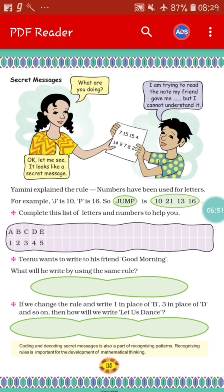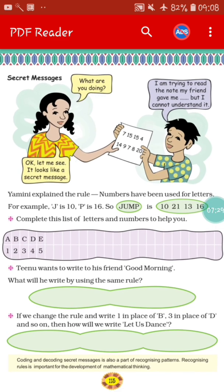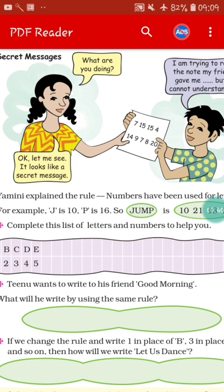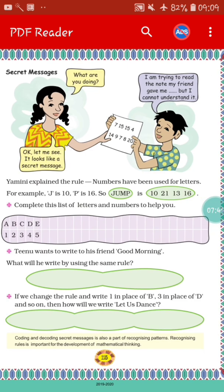The next portion is the Secret Message — this is my favorite and I hope it will become your favorite also, because you can secretly send your friend some message. So let's see what the secret message is. A friend is trying to read a note his friend gave him but cannot understand it. The note contains numbers: 7, 15, 15, 4 and 14, 9, 7, 8, 20. So what is the meaning of this?